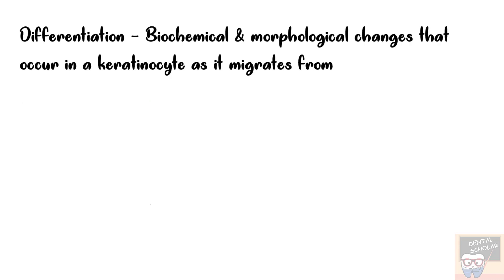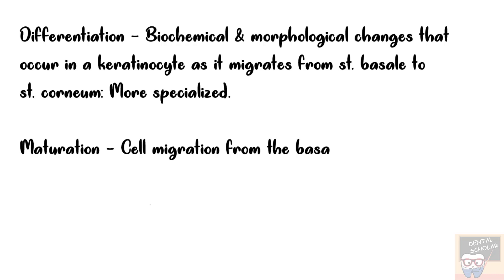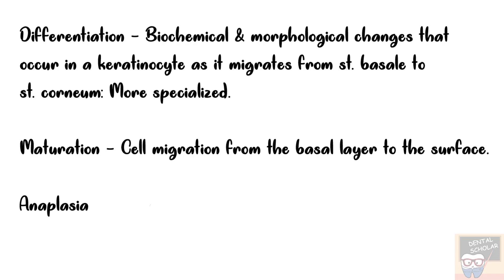Differentiation refers to the biochemical and morphological changes that occur in a keratinocyte as it migrates from stratum basale to stratum corneum — with differentiation, cells become more specialized. Maturation is the process of cell migration from the basal layer to the surface. Anaplasia represents loss of differentiation, where cells appear more primitive, and is seen in neoplasms.